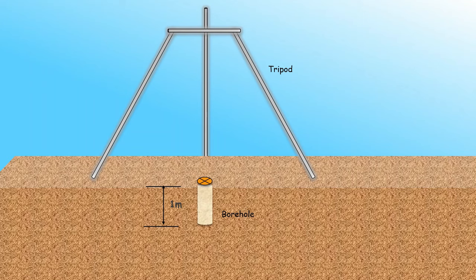Place that tripod concentrically above your borehole. Take your guide rod and fix the sampler at bottom. Attach the hammer of 63.5 kgs and anvil to the guide rod.